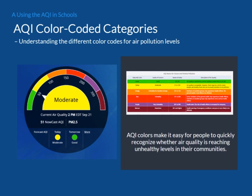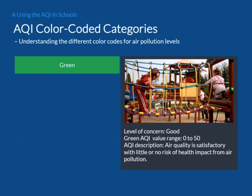The AQI is divided into six categories. Each category has a specific color corresponding to an increasing level of health concern. The colors make it easy for people to quickly recognize when air quality is reaching unhealthy levels in their communities. The first level is green, where the AQI value ranges from 0 to 50, and air quality is good or satisfactory, with little or no health risk from air pollution.